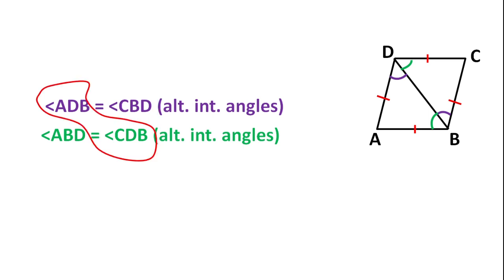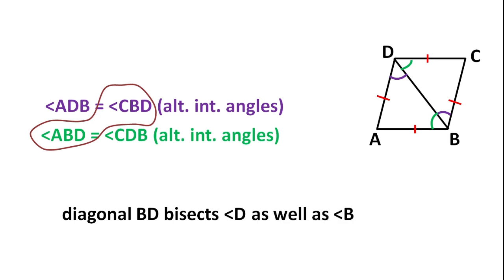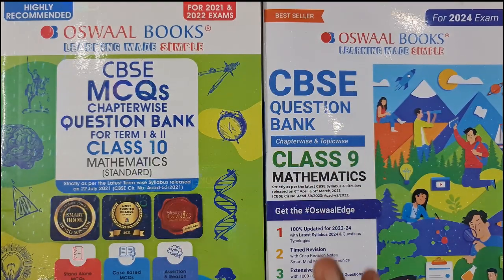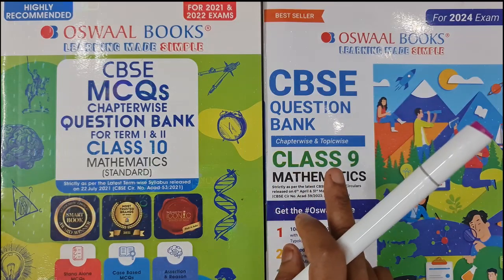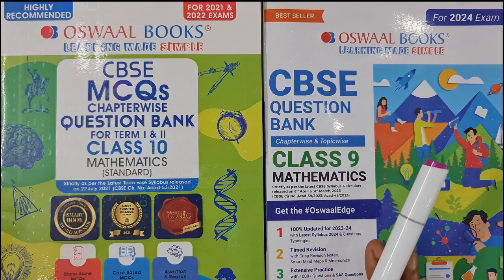Similarly, BC equals CD, so angle CBD equals angle CDB. All four angles are equal. Taking the pair — angle ADB and angle CDB are equal — diagonal BD bisects angle D. Taking the other pair — angle ABD and angle CBD are equal — diagonal BD bisects angle B. So diagonal BD bisects angle D as well as angle B. The second part is also proved. Hope you got the concept. To purchase the Oswald book, click the link in the description. It is strictly updated as per CBSE and is available for Classes 6 to 12.